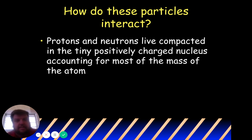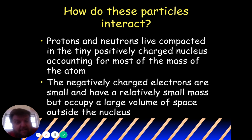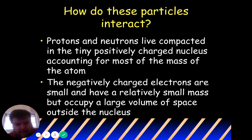Protons and neutrons live really tightly in the positively charged nucleus, which contains most of the mass. The negative electrons are small and have very little mass but occupy a large volume of space outside the nucleus — they're traveling all around the nucleus. But they can't get into the nucleus; only protons and neutrons are in there.